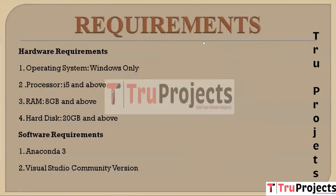Now coming to the requirements part. There are two types of requirements: hardware and software. For hardware: the operating system required is Windows, processor i5 and above, minimum 8 GB of RAM, and hard disk 20 GB and above. For software: Anaconda 3 and Visual Studio Community version are required.